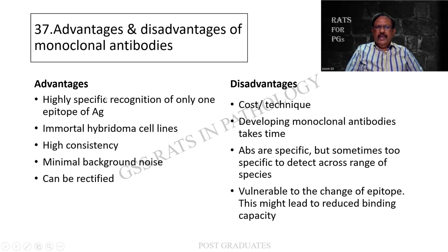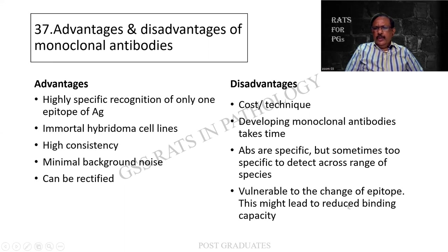The disadvantages are: it is quite costly and you need a good technique for it. Secondly, it takes time for the monoclonal antibodies to develop. Third one is the antibodies are specific - it is good, but sometimes they are too very specific and they cut across a lot of species, as a result of which we are not able to distinguish between two variants of a particular malignancy - so that can be a disadvantage. And it is vulnerable to a change in the epitope, which can lead to reduced binding capacity, leading to false negativity.